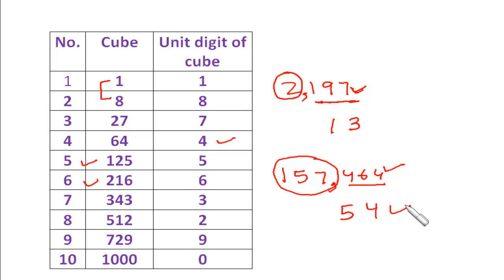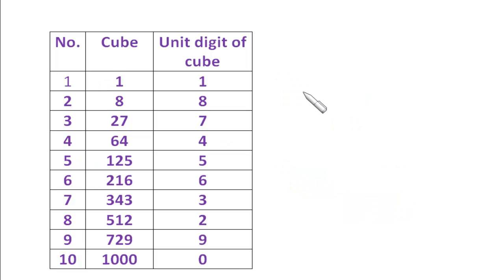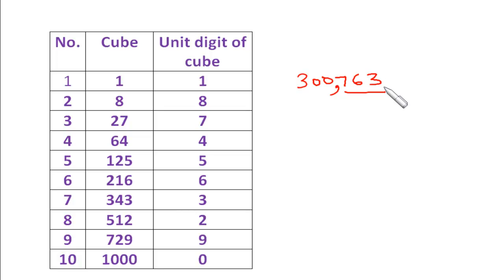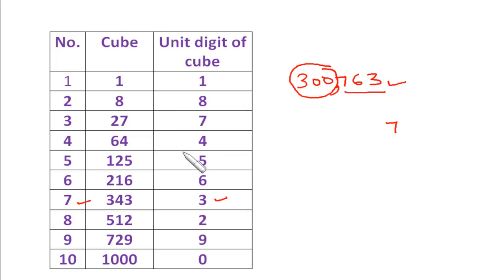Let's take one more number: 300763. Making sets of three digits gives '300' and '763'. The unit digit is 3, and the cube of 7 ends in 3, so the cube root has 7 at the units place. Now 300 lies between the cubes of 6 and 7 — that is, between 216 and 343 — so the tens digit is 6. Therefore the cube root of 300763 is 67.